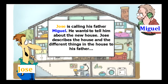Jose is calling his father Miguel. He wants to tell him about the new house. Jose describes the house and the different things in the house to his father.